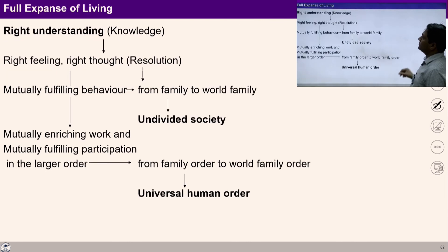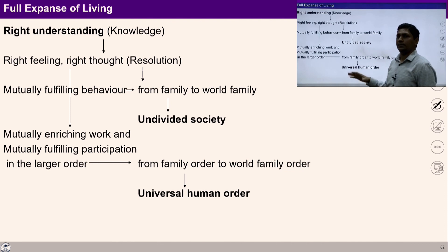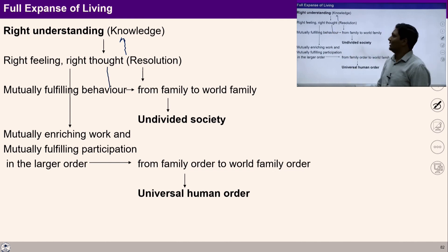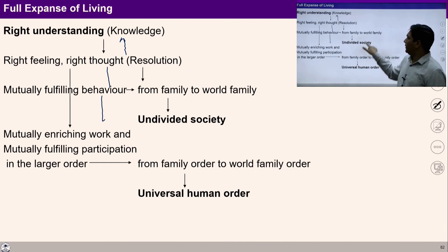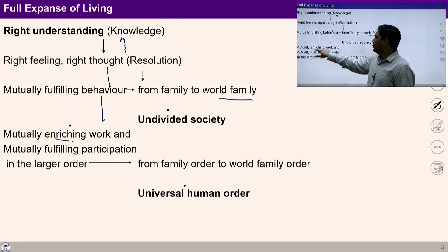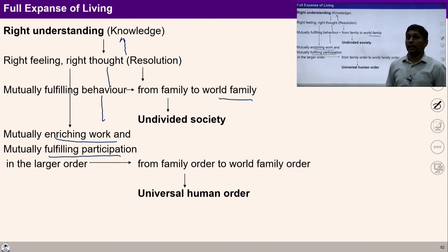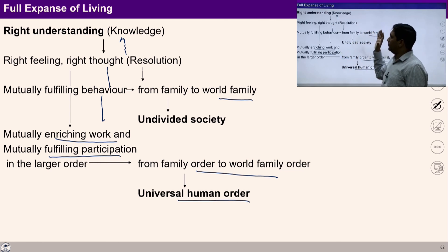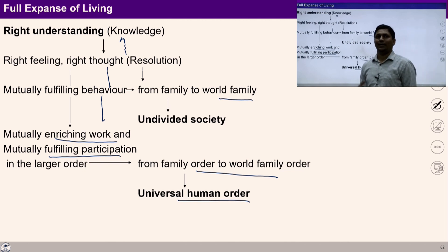With this expression, we can again place everything at the level of living. If I have right understanding, then I can have right feeling and right thought, which will lead to mutually fulfilling behavior from family to world family order. With right feeling and thought, mutually enriching work and mutually fulfilling participation in the larger order will ensure universal human order. Taking care of all these things — recognition of values, their evaluation, their fulfillment, importance of gestures and body postures — means we are able to ensure justice, at least from my side.